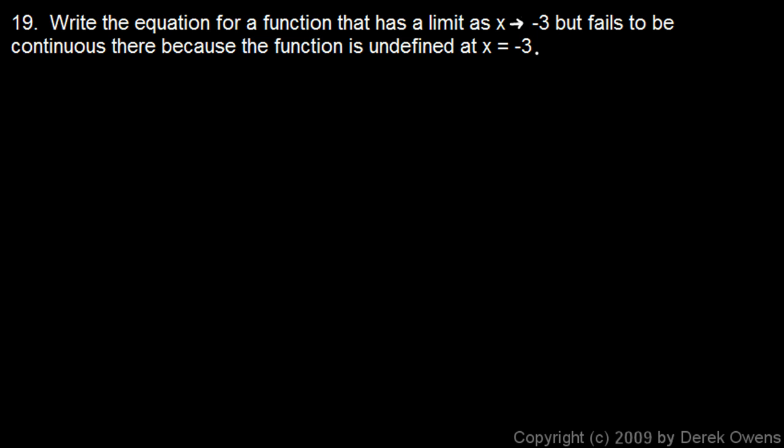Number 19: write the equation for a function that has a limit as x approaches negative 3, but fails to be continuous there because it is undefined at x equals negative 3. If it has a limit but isn't defined at that point, that would imply it has a hole in the graph at that point. So we need to come up with a function that has a hole at x equals negative 3 — we'll put x plus 3 in the denominator.